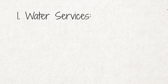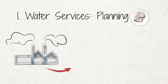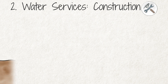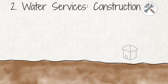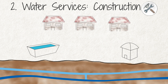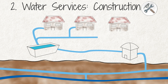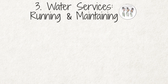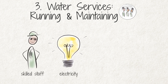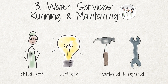Firstly, the municipality needs to plan the exact nature of the water supply system and how much it will cost. Secondly, the water service needs to be constructed. Depending on the circumstances, this could require anything from a dam to a borehole, a purification plant, a water reservoir, pumps, meters and a network of underground pipes. Thirdly, running the water system requires skilled staff and electricity. The system also needs to be regularly maintained and repaired when necessary, which also requires tools and materials.